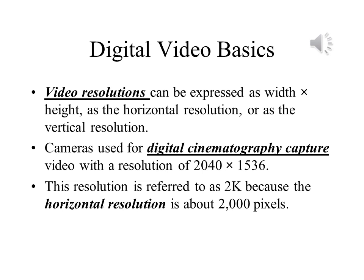The number of frames per second is only one factor that determines the quality of a video. Resolution is also important, which is usually expressed by the number of pixels across the height and width of the screen. Digital cinematography cameras use a resolution of 2040 x 1536 pixels. This is referred to as 2K because the horizontal resolution — the number of pixels across the screen from left to right — is approximately 2,000 pixels.